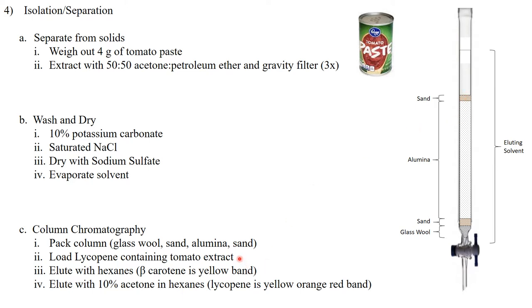On top of the sand, we're then going to load our lycopene that we've evaporated down to a small amount of liquid. And then we're going to start eluting, meaning we're going to open up this valve and we're going to start allowing the solvent to move through the alumina.